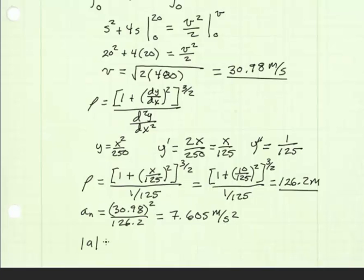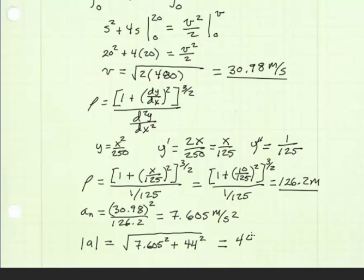The magnitude of the acceleration then becomes the square root of our normal acceleration squared, 7.605 squared, plus our tangential acceleration squared, 44 squared, which equals 44.7 meters per second squared.